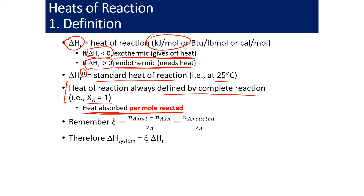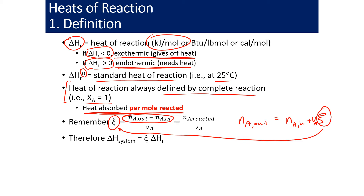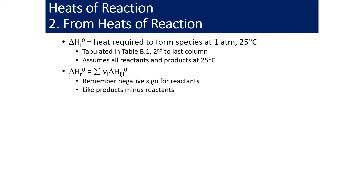Remember that we defined the extent of reaction xc, where Na out equals Na in plus R_xc times the stoichiometric coefficient. Rearranging and solving for xc, the quantity in the numerator is also the number of moles reacted. Therefore, the enthalpy delta H of our system is going to be xc, the extent of reaction, multiplied by the heat of reaction.